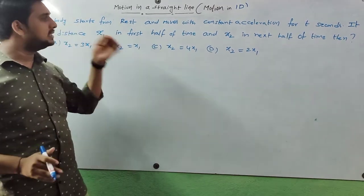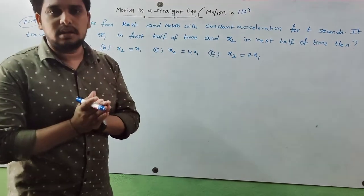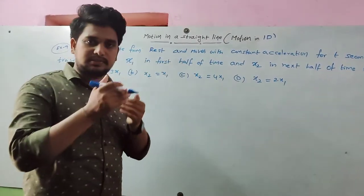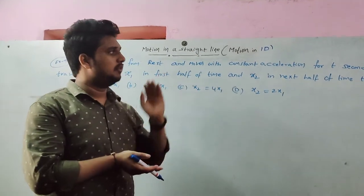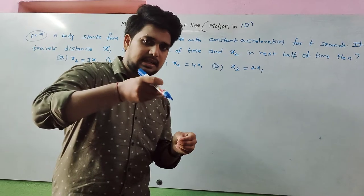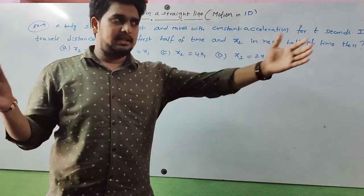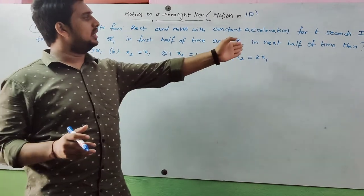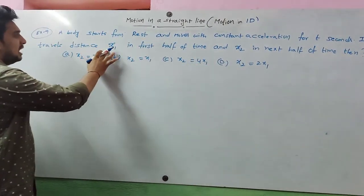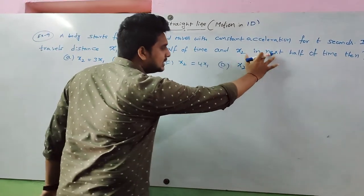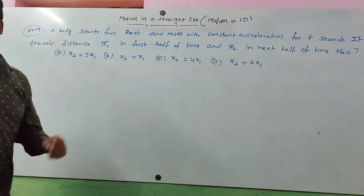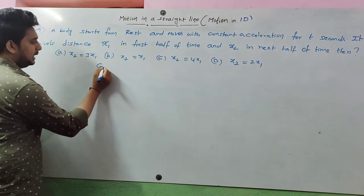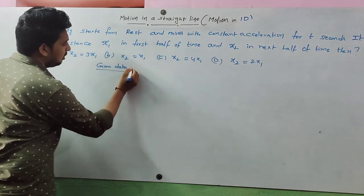First, what is given and what we need to find — this is very important. The body starts from rest and moves with constant acceleration for t seconds. In the first half of time it covers distance s1, and in the next half of time it covers distance s2. We need to find the relation between s1 and s2.